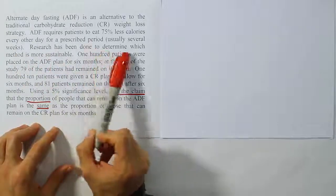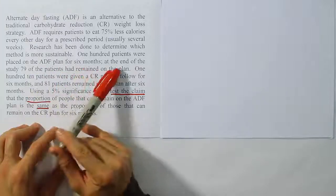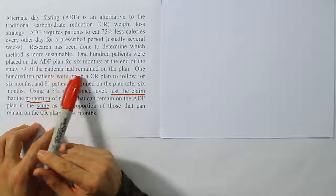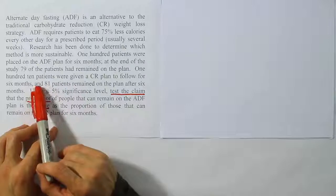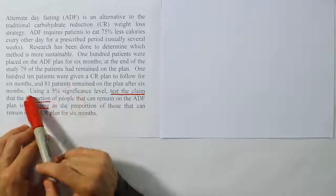Research has been done to determine which method is more sustainable. 100 patients were placed on the ADF plan for six months. At the end of the study, 79 of the patients had remained on the plan. 110 patients were given a CR plan to follow for six months and 81 patients remained on the plan after six months.